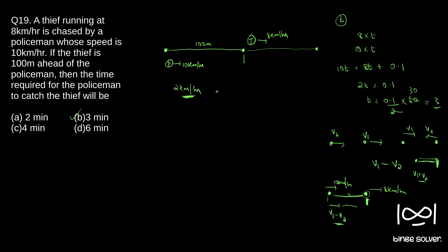100 meters is 0.1 kilometers. Using distance divided by speed, the time taken is 0.1 divided by 2, in hours. Multiplying by 60 gives 3 minutes — the same answer. If you understand this concept, the moment you see the question you can find the relative velocity and the distance to cover, and quickly reach the answer. This method is much simpler.